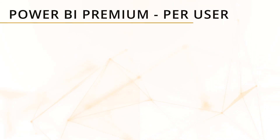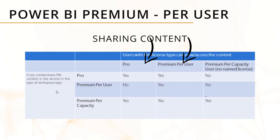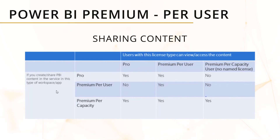This table breaks down what your end users can see and what they cannot. For example, if you have a Pro license, can you see the Premium Per User workspace? No. Premium Per User can access everything in the Premium per capacity workspace. If you have a Free version, you can only have access if you have a Premium per capacity workspace.